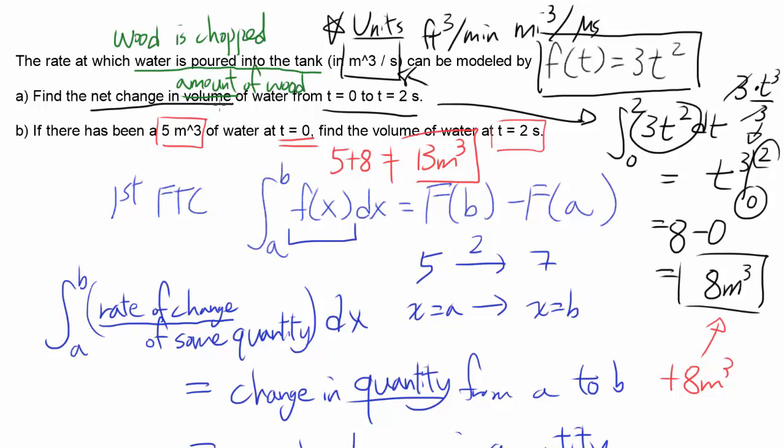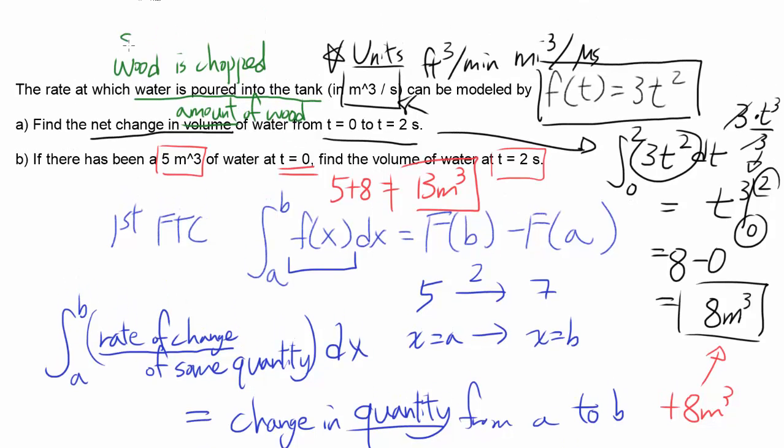Or it doesn't have to be wood. It can be the rate at which students are entering the room. Then you're going to be finding the net change in number of students.